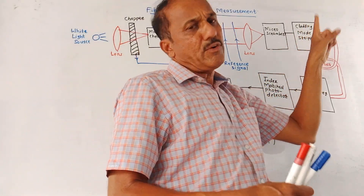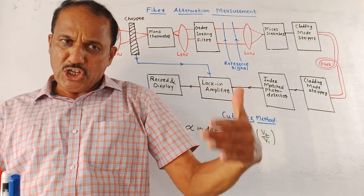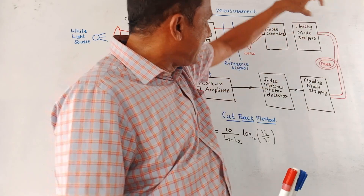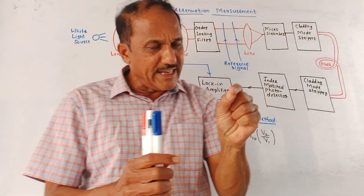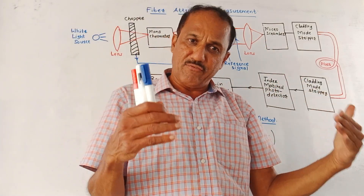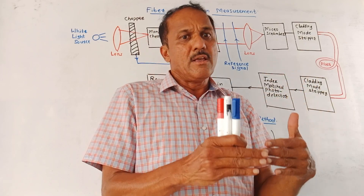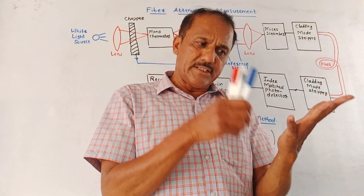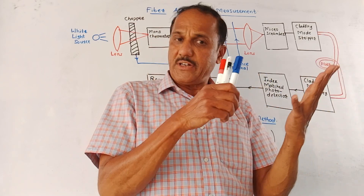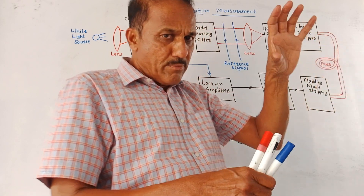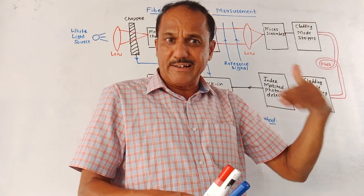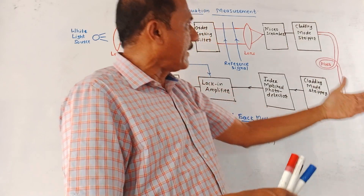Next is the cladding mode stripper. There can be leakage of power from the core layer to the cladding layer, so to avoid this, the cladding mode stripper is used. It is an S-shaped groove made using Teflon material filled with glycerin. Glycerin has a refractive index slightly greater than the refractive index of the core of the fiber optic cable. Because of this, light escaping from the core and trying to enter the cladding layer is prevented.